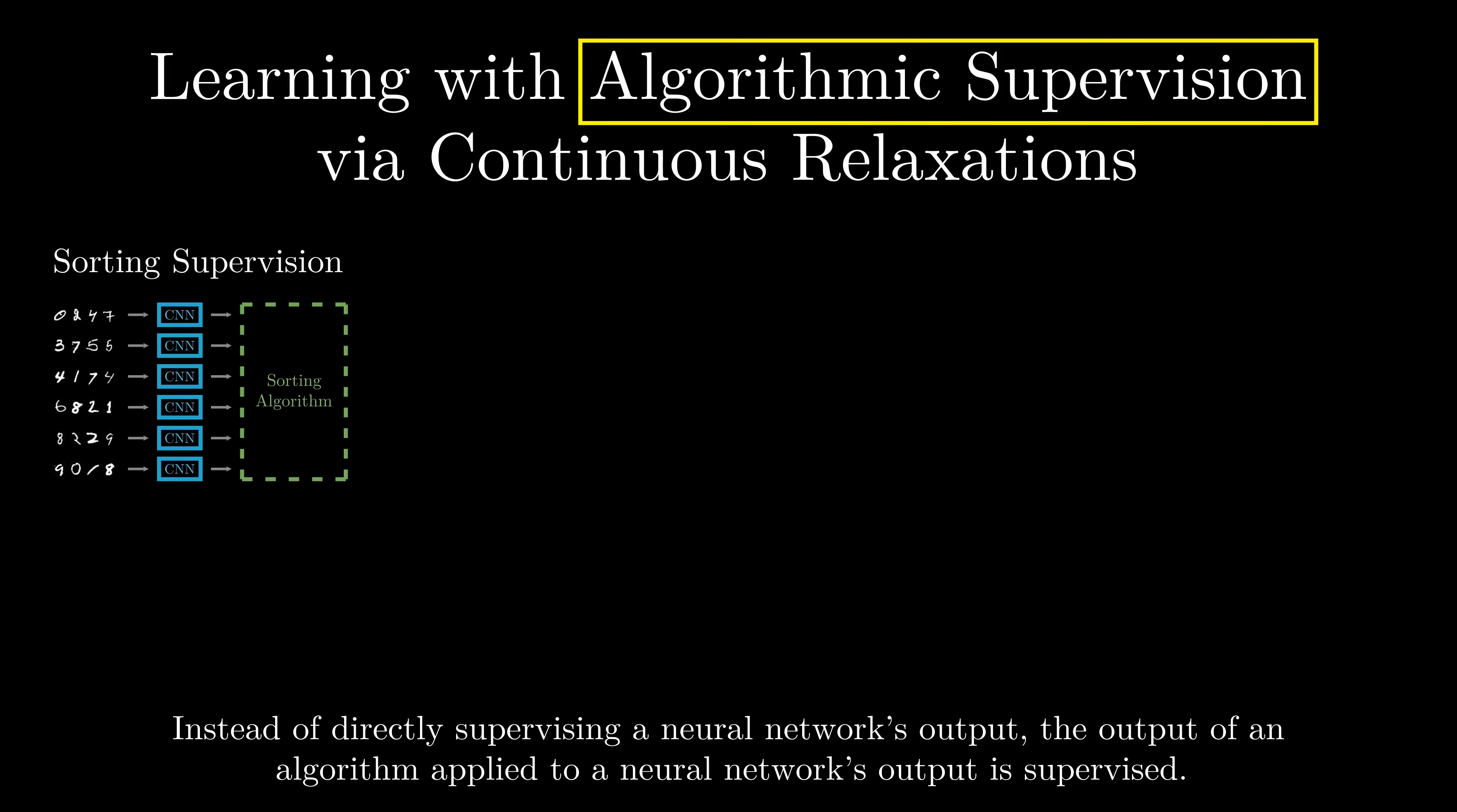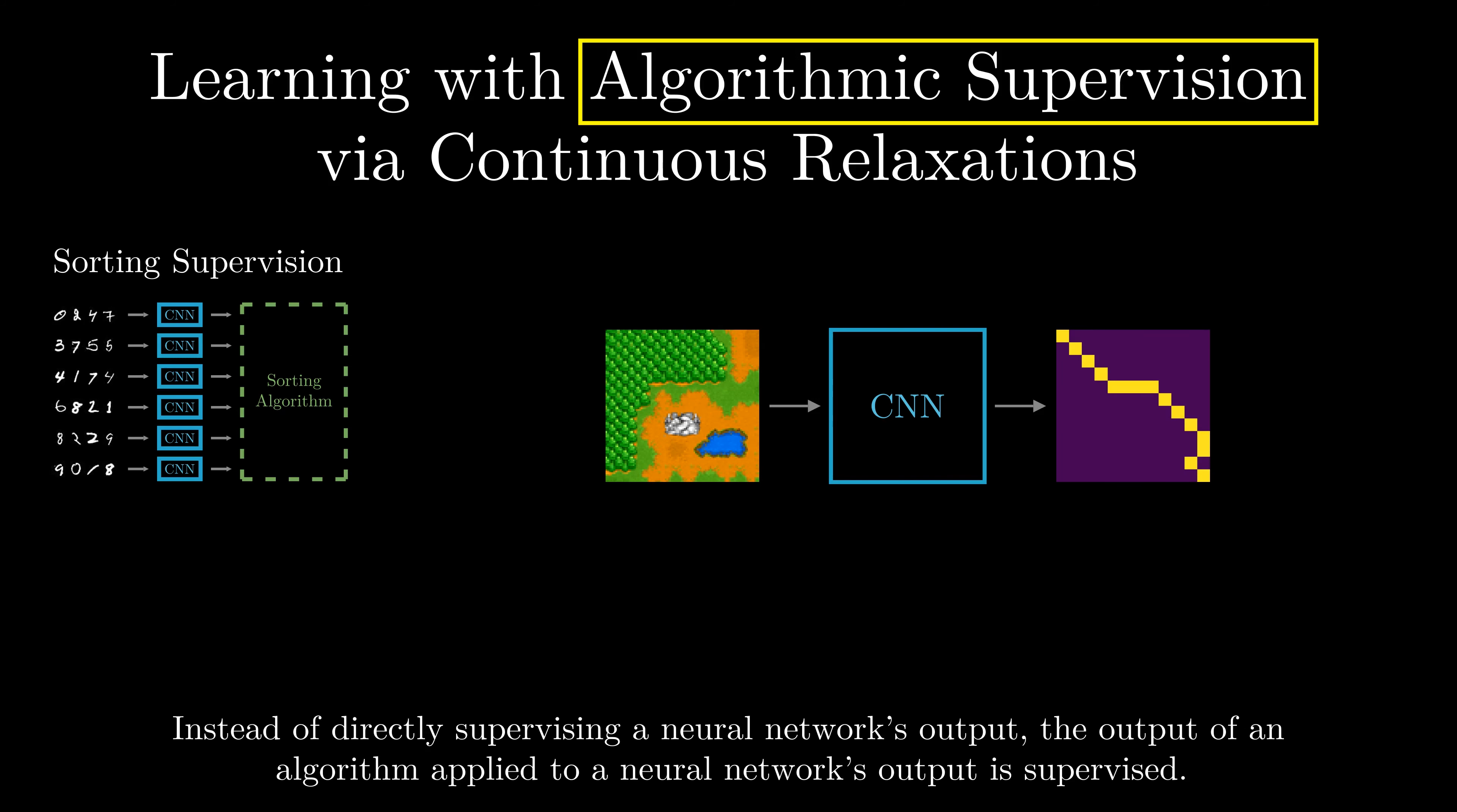The second scenario of algorithmic supervision is where we would conventionally want to obtain a neural network's prediction but where the neural network also has to solve a task which could also be solved by an algorithm. An example for this is shortest path supervision where the input is a Warcraft terrain map and the task is to predict the shortest path across the map according to some hidden costs.